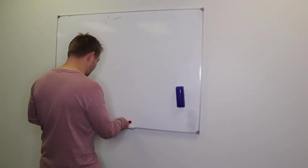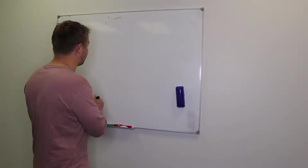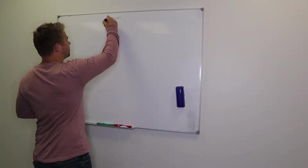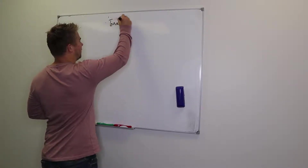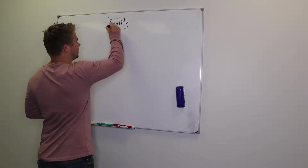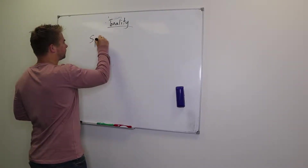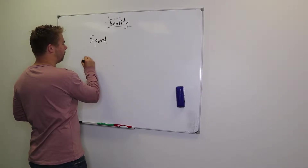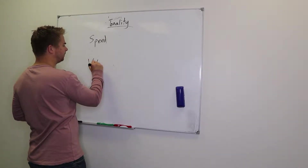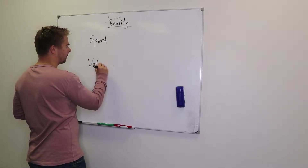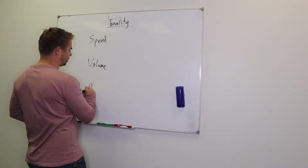So we're going to talk about tonality. Tonality can be controlled in three ways: speed, volume and pitch.